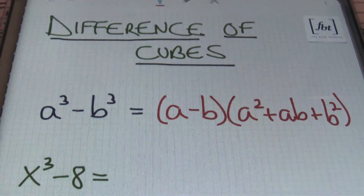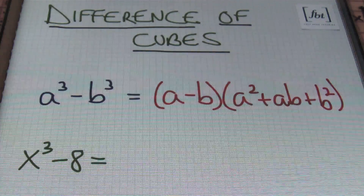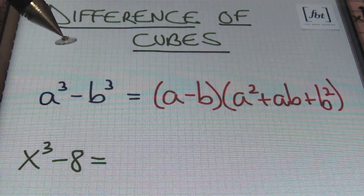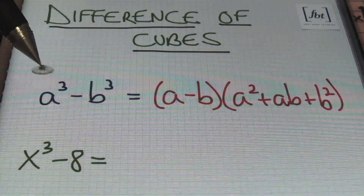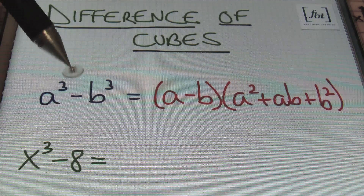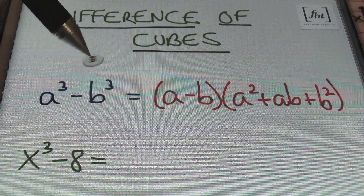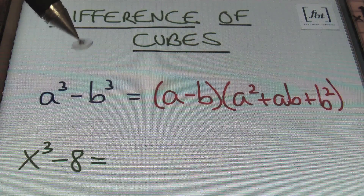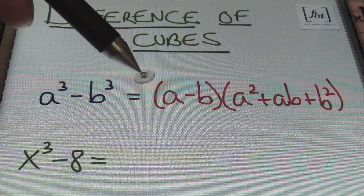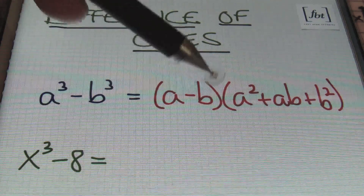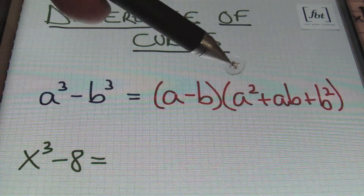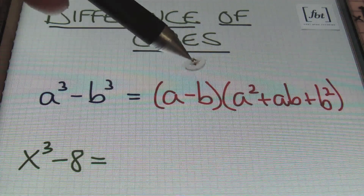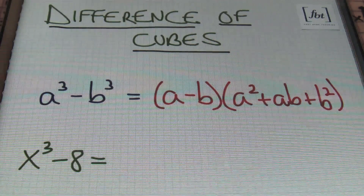What we have before us today for the difference of cubes is the actual factoring pattern, the format of it. Anytime you have something cubed minus something cubed, that's called the difference of cubes. The factoring pattern for that is a minus b, times the first term squared — a squared — plus the product of these two terms, plus b squared.